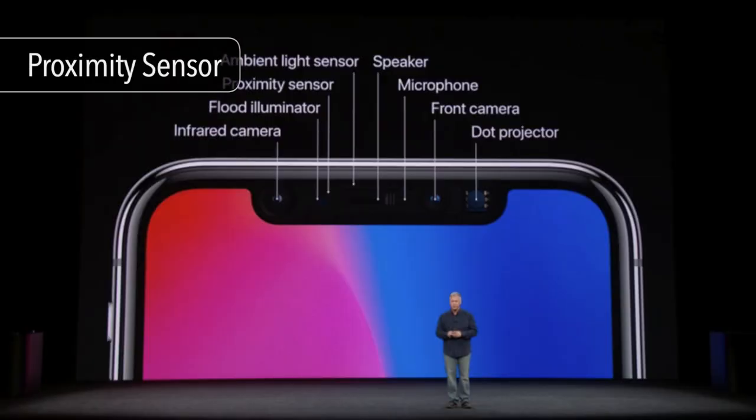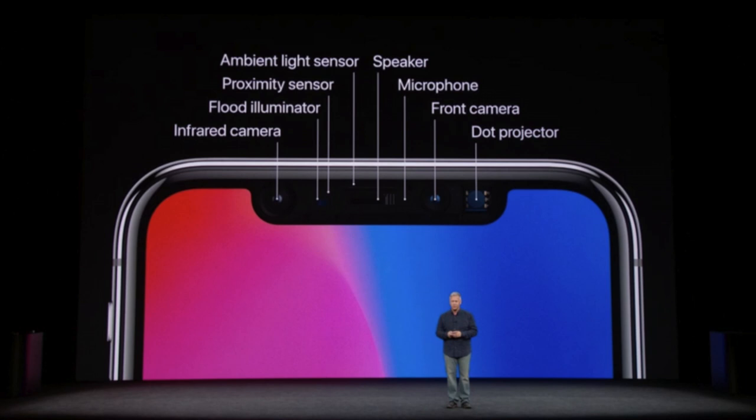The next sensor is the Proximity Sensor. This is on a touch-enabled phone. When you use the phone for a call, the proximity sensor detects how close the phone is and can disable the touch-enabled screen to prevent accidental input.